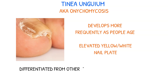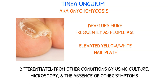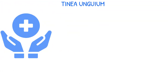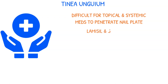Nail fungal infections are differentiated from other conditions by using culture, microscopy, and the absence of other symptoms. Treatment for Tinea unguium is challenging because topical and systemic antifungal medications have a difficult time penetrating the nail plate. Lamisil and Sporanox are oral antifungals commonly prescribed for this condition.